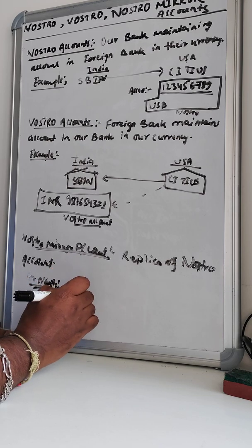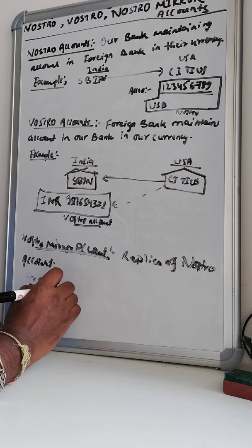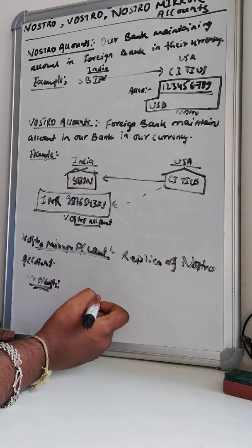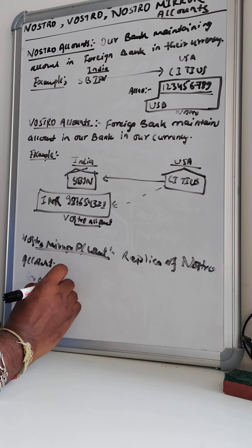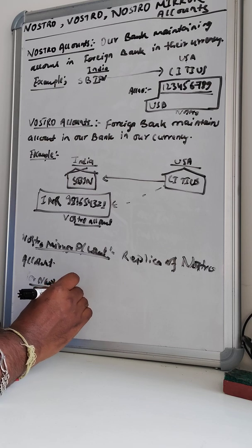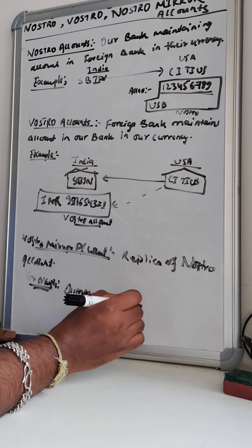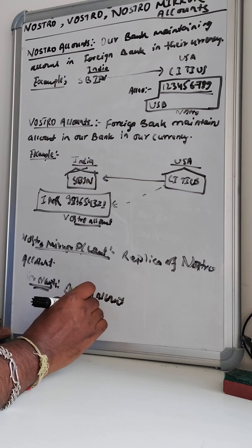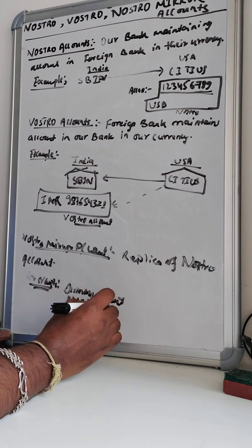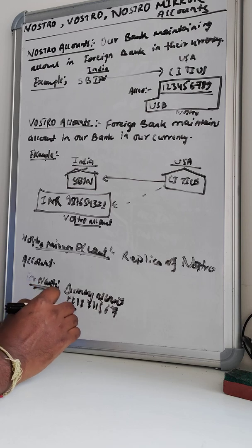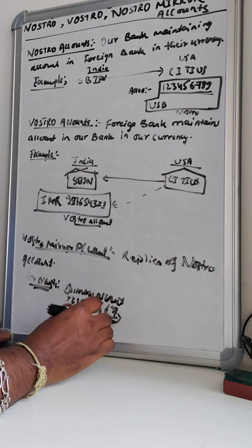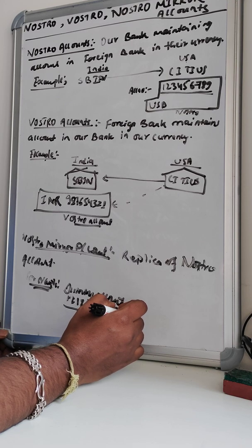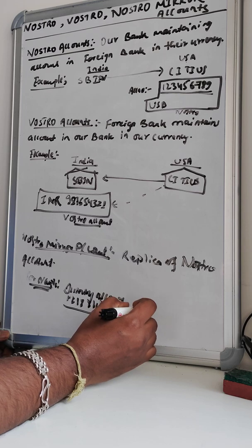What SBI will do is maintain a replica of the Nostro account — possibly in their own currency or in the same currency. This replica, let's say account 12123456789, is a dummy account where whatever debit and credit happens in the Nostro account, the same thing will be debited and credited to this particular account as well.